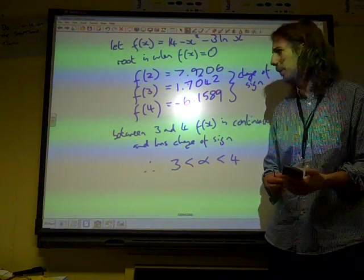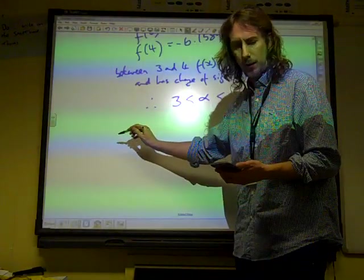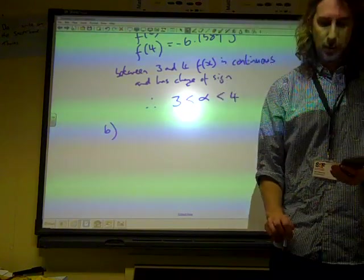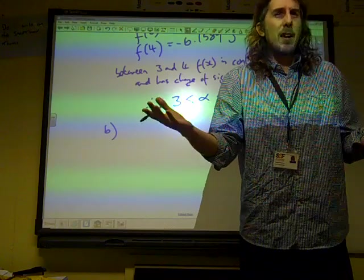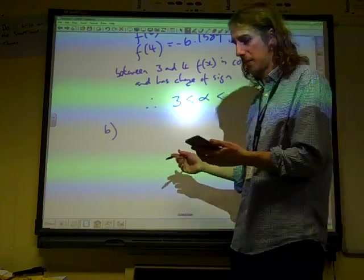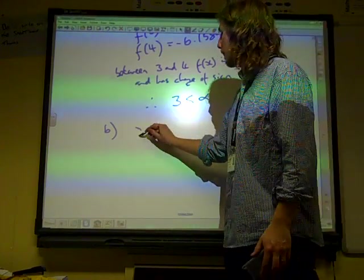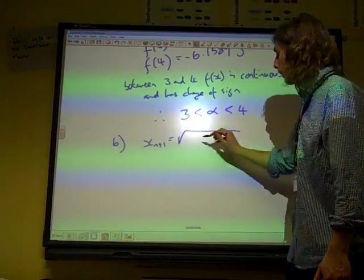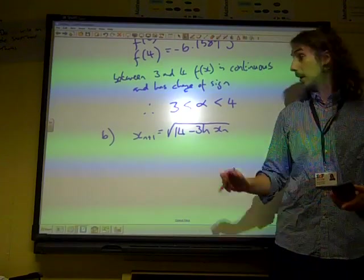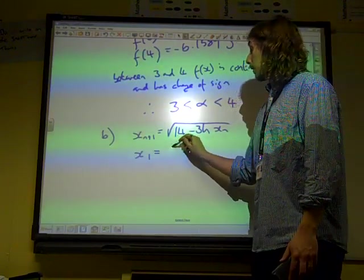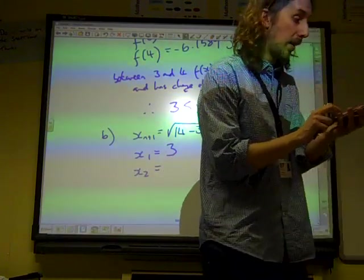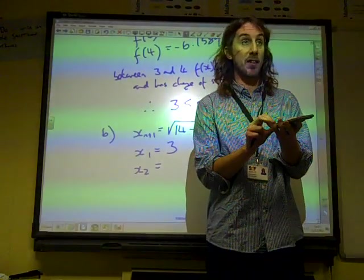Then use the iterative formula, and you did really well on this. Those people got loads of marks. Making sure that alpha is correct to two decimal places. Where are we going to start? The root's between 3 and 4. We'll start at 3. That seems a sensible thing to do. x_{n+1} is the square root of 14 minus 3 ln x_n. They didn't even ask us to derive that.